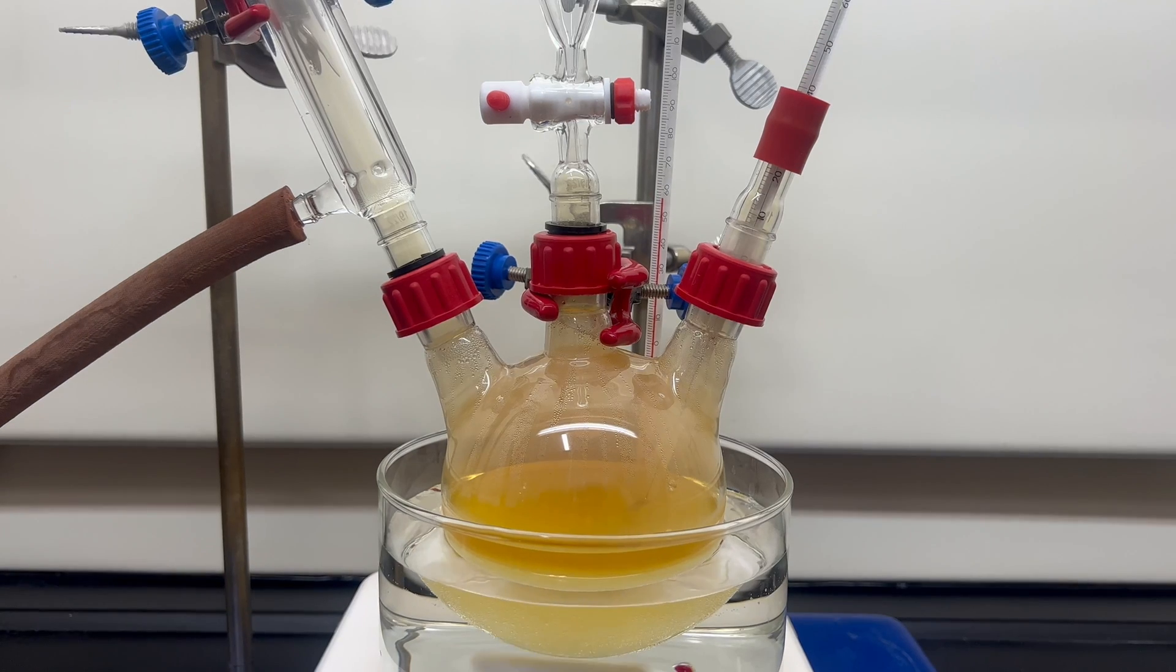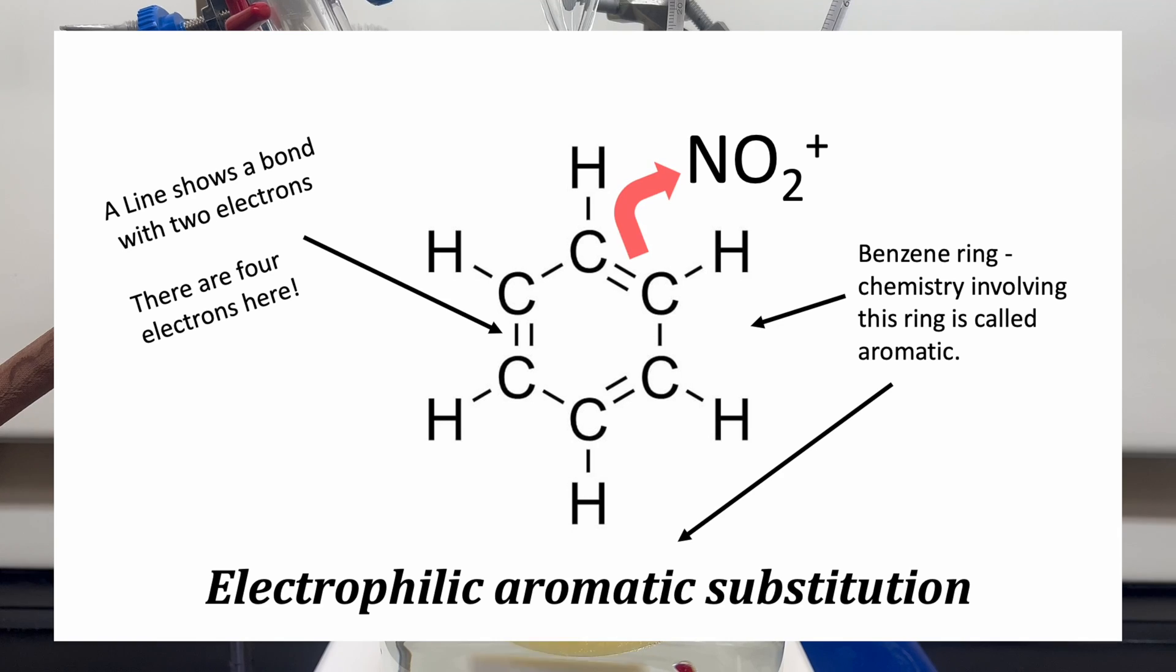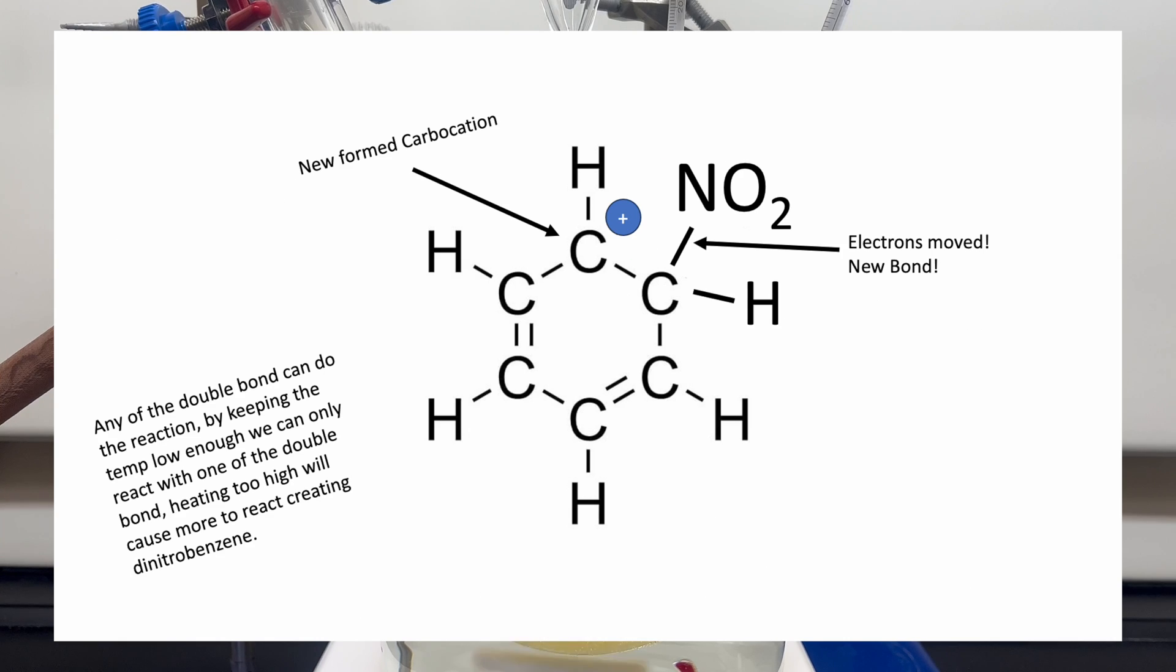The nitration of benzene is known as an electrophilic substitution reaction. That's a lot of big words, so let's break down how it works. The nitronium ion is generated by producing the mixed acid. It then attacks a double bond on benzene, creating a new bond between a carbon and a nitronium ion. The movement of electrons also produces a carbocation.